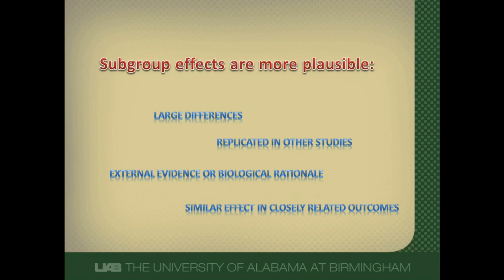For example, let's say we're looking at quality of life in a study and we see a subgroup effect on one measure of quality of life, and if other measures of quality of life are also used and show a similar subgroup effect, it's probably a real finding.